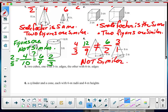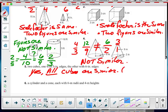Two cubes, one with 5-inch edges and the other with 6-inch edges. And like I said, yes, because all cubes are similar. And remember, cubes meaning that all the sides are the same measure. So consequently, the scale factor will always be the same.